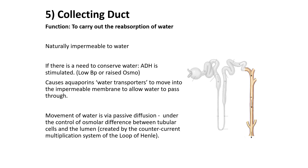Part of the functional filtering unit of the kidney, known as the nephron, is the collecting duct. This carries out reabsorption of water. It is naturally impermeable to water. If there is a need to conserve water, antidiuretic hormone is stimulated — such as due to low blood pressure or raised osmolality. This causes aquaporins, also known as water transporters, to move into the impermeable membrane to allow water to pass through. Movement of water occurs via passive diffusion, under the control of the osmolar difference between tubular cells and the lumen, created by the counter-current multiplication system of the loop of Henle.